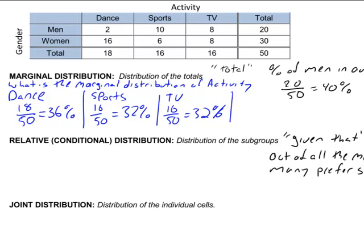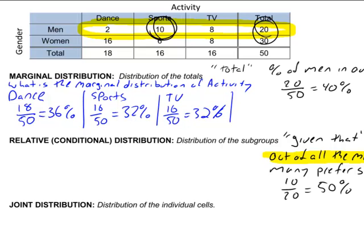Out of all the men, how many prefer sports? The key to doing these is to realize what your subcategory is. In this case, it's going to be out of all the men is my subcategory. So what I want to do is kind of highlight or circle that subcategory. And now I only can use those numbers in my calculation for my percentage. So out of all the men, so that's 2, 10, 8, my total men is 20. How many prefer sports? Well, sports is going to be right here. 10 out of 20. 10 divided by 20 is 50%. So out of all the men, how many prefer sports? 50% or 50% of all the men prefer sports.